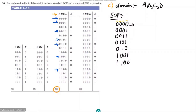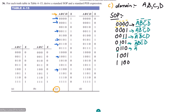For the first term (0 0 0 0) we complement all four, giving a' b' c' d'. For the second term (0 0 0 1) we complement the first three: a' b' c' d. For (0 0 1 1) we complement a and b: a' b' c d. For (0 1 0 1): a' b c' d. For (0 1 1 0): a' b c d'. For (1 0 0 1): a b' c' d.